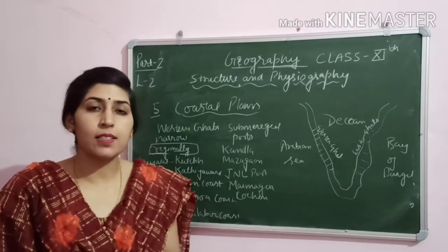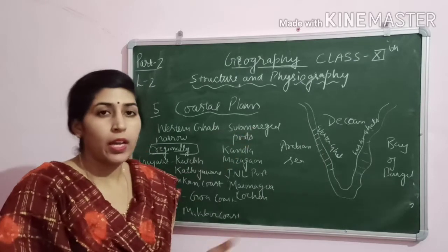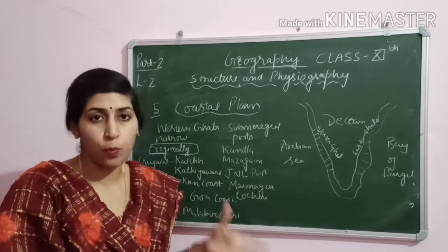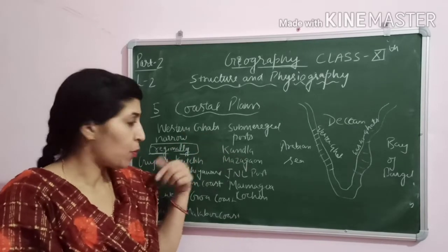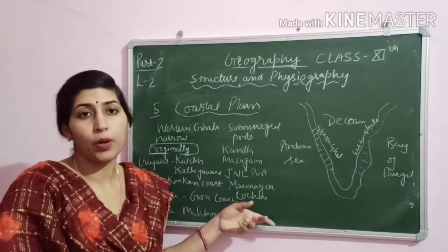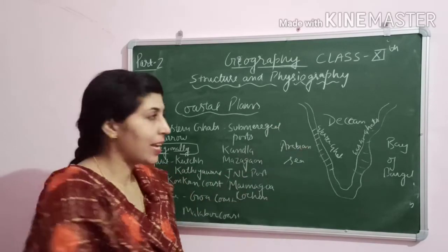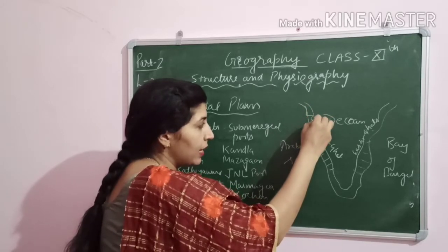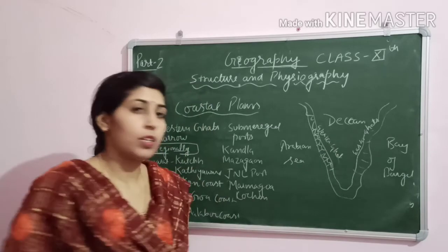First we discuss the western coastal plain. In the western coastal plain there are many ports, because its coastal line is very discontinuous. There are many ports such as Kandla port, Mazagaon port, Jawahar Lal Nehru port, Marmugao port, and Cochin port.